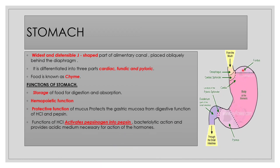The stomach regions include the fundus, the body, and the pylorus. It has a cardiac sphincter and a pyloric sphincter. The major functions of the stomach are storage of digested food, hemopoietic function, productive function, and the function of HCl, which is to activate pepsinogen into pepsin. Various bacteriolytic actions are also seen due to the strong acidic conditions.